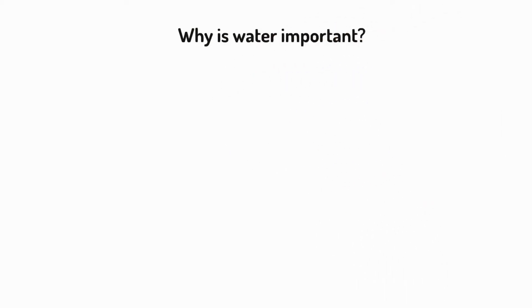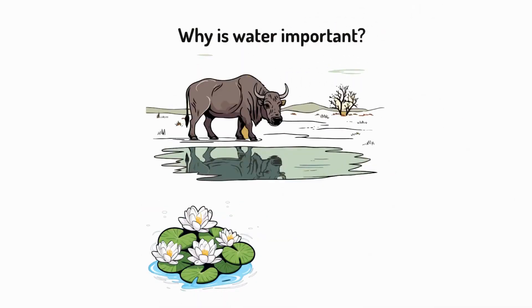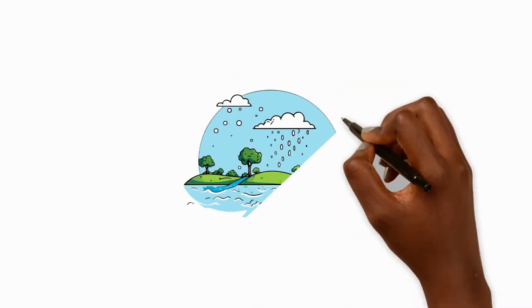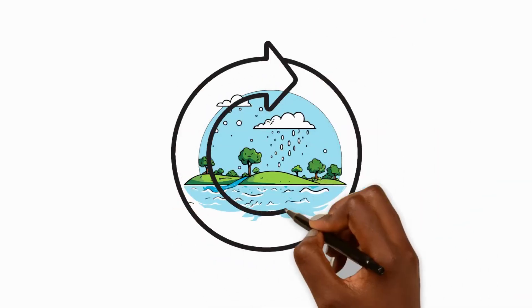Water is important for life. Plants and animals need water to survive. The water cycle recycles water over and over on Earth.